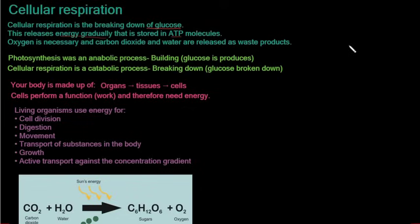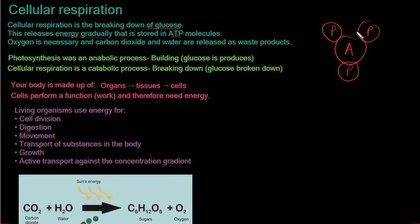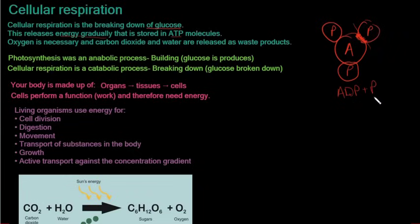ATP, adenosine triphosphate, which we looked at during photosynthesis. When we have adenosine and three phosphates, there's a lot of energy packed into the bond between one phosphate and adenosine. When we need that energy, that bond is broken and it becomes adenosine diphosphate. During this process oxygen is necessary, and carbon dioxide and water are released as waste products.